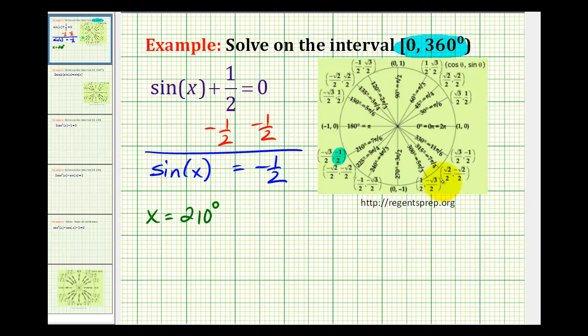And if we look in the fourth quadrant, notice there's a y coordinate of negative 1/2 here at 330 degrees or 11 pi over 6 radians. And these would be the solutions to the equation.